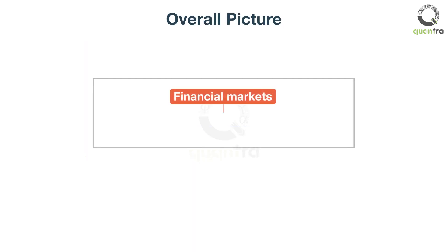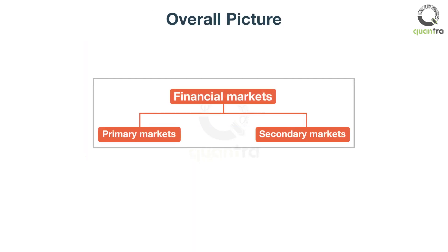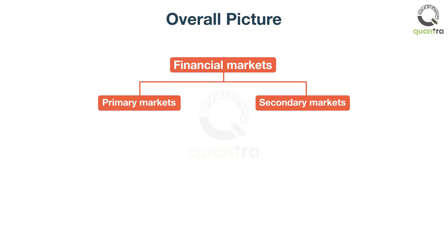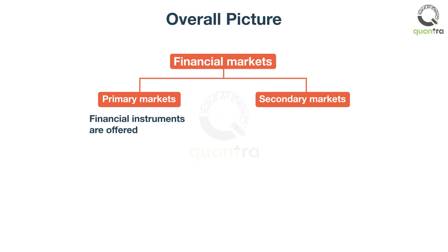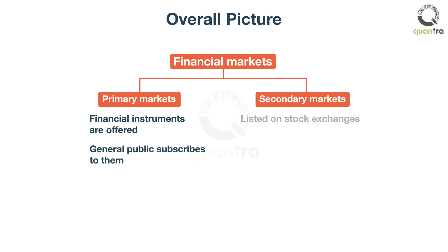Now that you've been introduced to primary and secondary markets, it's time to get the overall picture. First, financial instruments such as stocks and bonds are offered in the primary market by the issuing corporations. Next, the general public subscribes to those financial instruments and money flows from the investors to the corporation. Then, they are listed on the stock exchanges for the purpose of trading. After that, exchanges work as a secondary market, where investors trade amongst themselves.